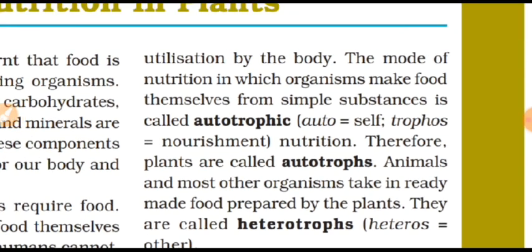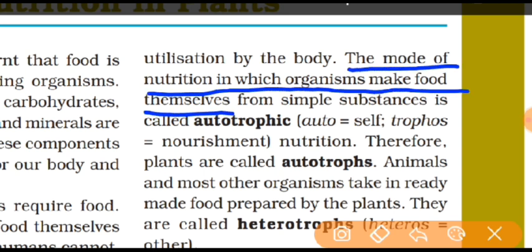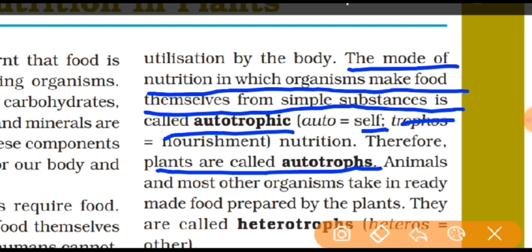In autotrophic nutrition, any living organism prepares its own food by using simple substances. Auto means self, trophs means nourishment — meaning preparing your own food and fulfilling your own requirements. Therefore, plants are called autotrophs, because plants prepare their own food themselves.